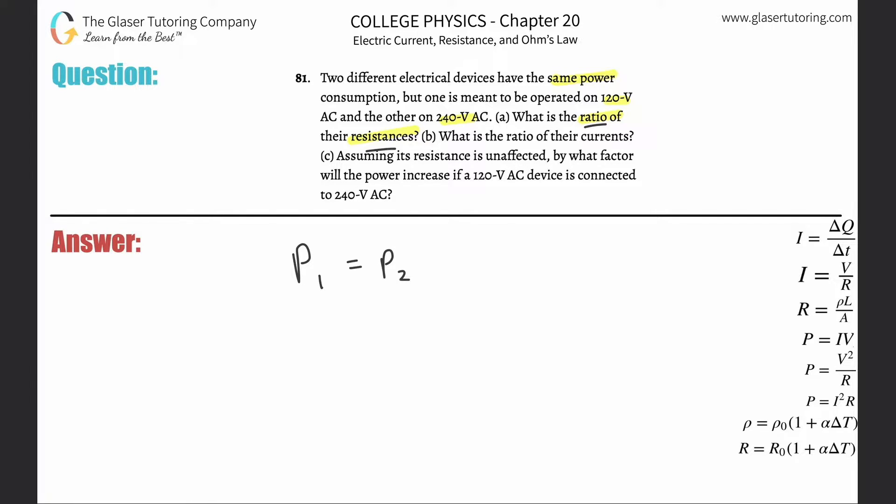Since they want us to find a ratio of the resistances and they're giving me voltages, I have to think about how resistance and voltage are related to power. The way it's related is through the equation on the right-hand side: power is equal to V squared over R.